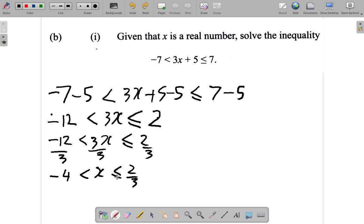So what you see here is that x is greater than negative 4, and at the same time, x is less than or equal to 2/3.